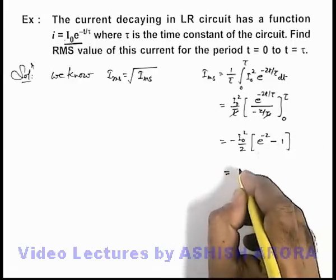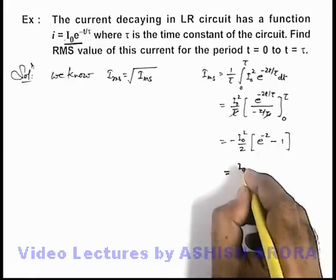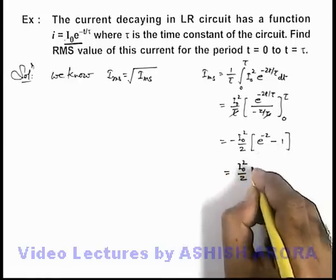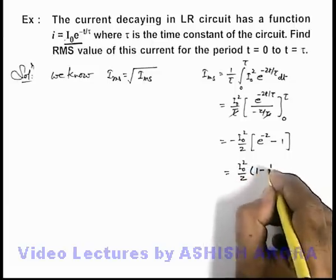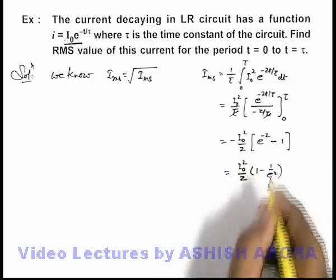So this is giving as a value i-not square by 2 times (1 minus 1 by e square), having taken the negative sign inside.